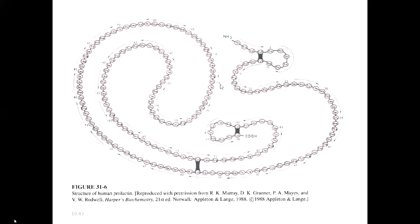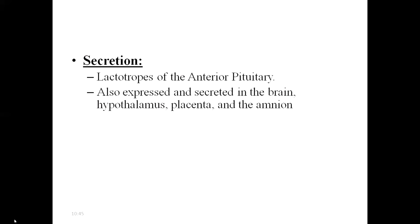Prolactin is a single polypeptide chain containing three intra-disulfide bonds. It is predominantly secreted from the lactotrophs of the anterior pituitary gland. Apart from that, prolactin is also expressed and secreted in the brain, hypothalamus, placenta, and amnion.